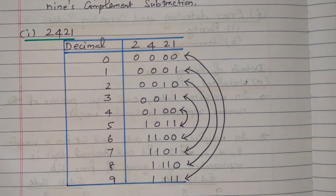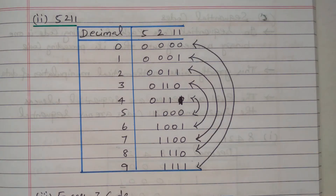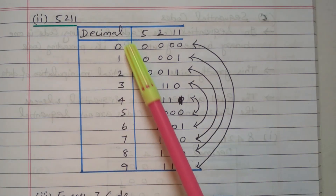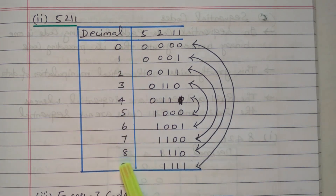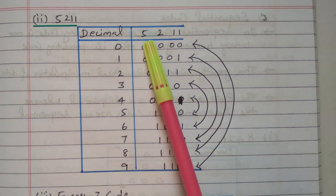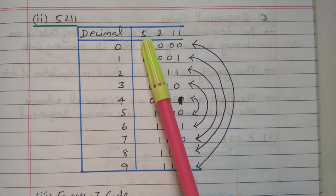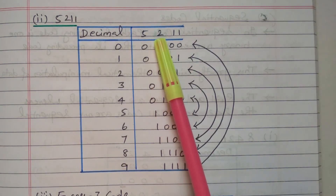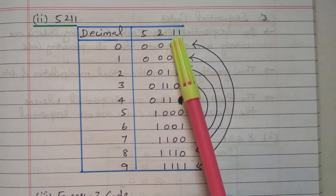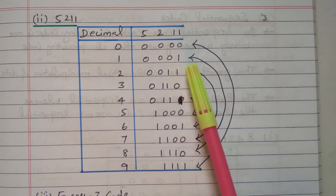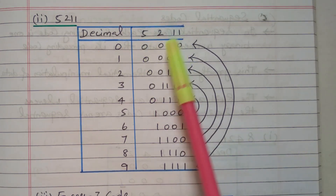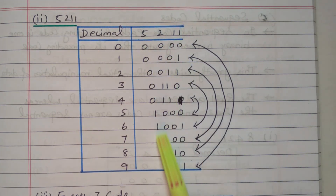Now we will go to the next code: 5211. In this 5211 code, the decimal numbers 0 to 9 are available. The weight is 5,2,1,1 — first position is 5, second position is 2, third position is 1, fourth position is 1. Accordingly, we can frame the code.